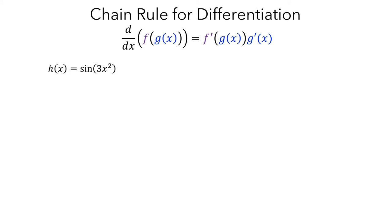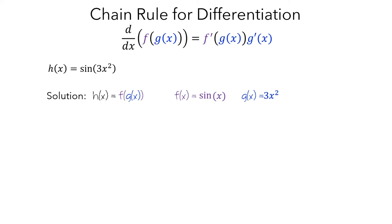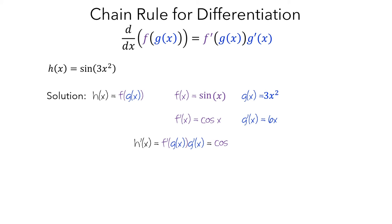For the first example, we have h equals sin. We want to write h as a composition of f and g. The outside function f is sin, and g, the argument, is 3x squared. The next step is to compute the derivatives of the outside function and the argument. The derivative of f is cos, and the derivative of g is 6x. To use the chain rule, we take the derivative of the outside function, plug in the argument, and multiply by the derivative of the argument. So the derivative of sin is cos — plug in the argument, then multiply by the derivative of the argument.